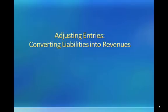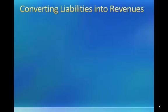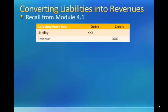In this module we will discuss the second type of adjusting entry: the adjusting entry that converts liabilities into revenues. Recall from module 4.1 that the second adjusting entry involves a debit to a liability account and a credit to a revenue account. The unearned revenue liability balance sheet account is a common example of accounts that require this type of adjusting entry at the end of the accounting period.